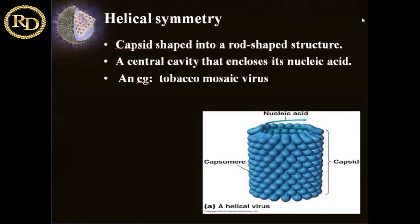In helical symmetry, the protomers or capsomers are not grouped as discrete capsomers but are bound to form a long ribbon-like structure. These ribbon-like structures fold to form a helix. Because the protomers are thicker at one end than the other, the diameter of the helical capsid is determined by the characteristics of the protomers, while the length is determined by the length of the nucleic acid. A helical structure can enclose a huge amount of nucleic acid. Tobacco mosaic virus is a very common example of helical symmetry.